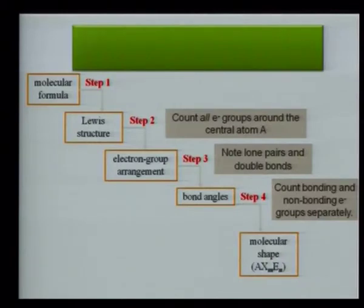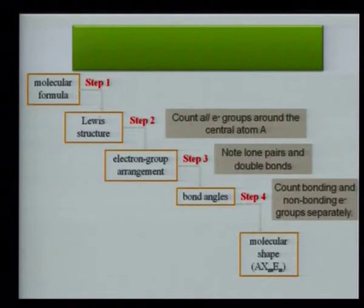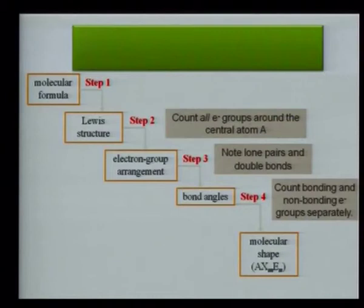For sp³d² hybridization: BrF₅ has one lone pair and five bond pairs, so geometry is square pyramidal, not octahedral. XeF₄ has two lone pairs and four bond pairs, so geometry is square planar. VSEPR theory helps decide geometry because we arrange electrons to minimize repulsion — that is why distorted structures occur.